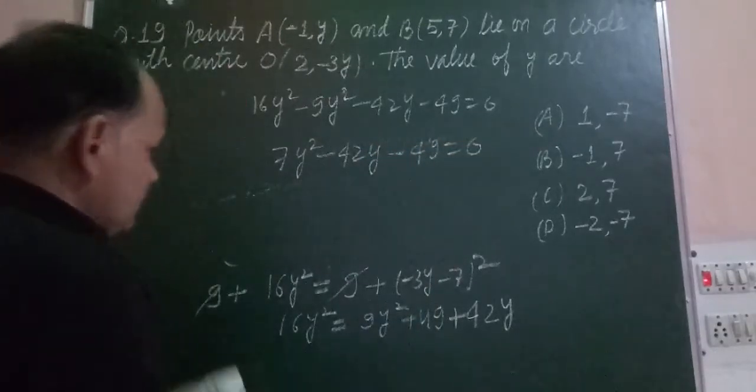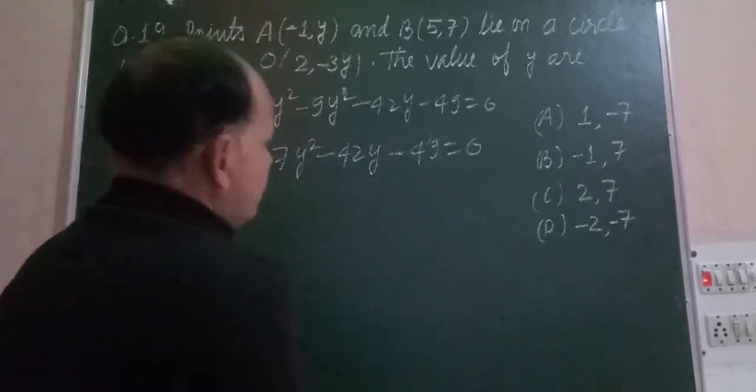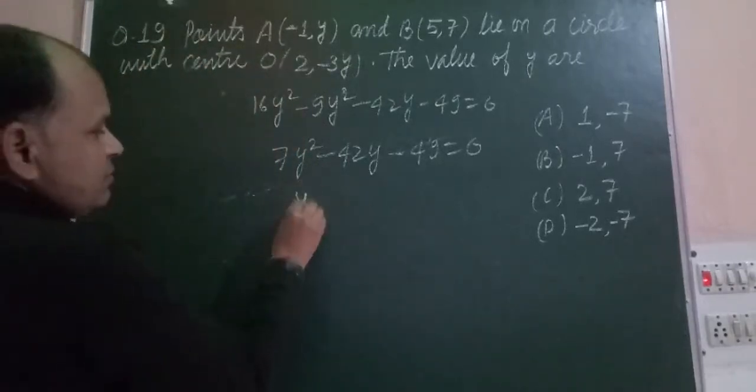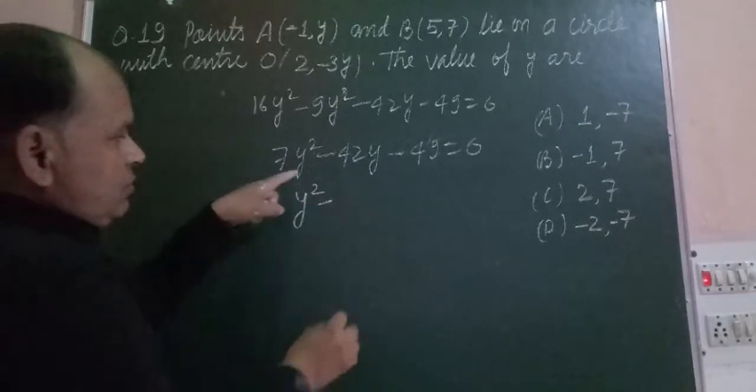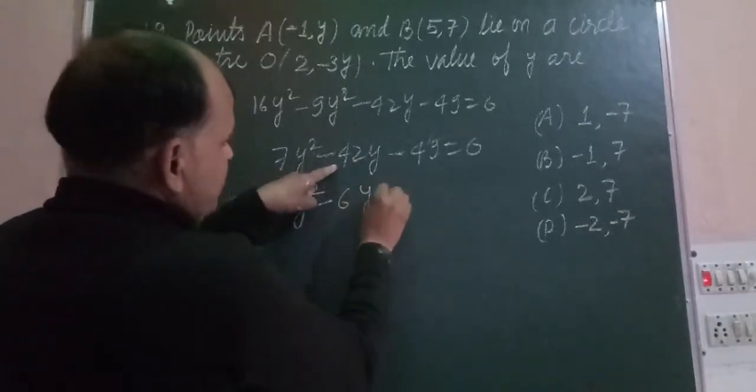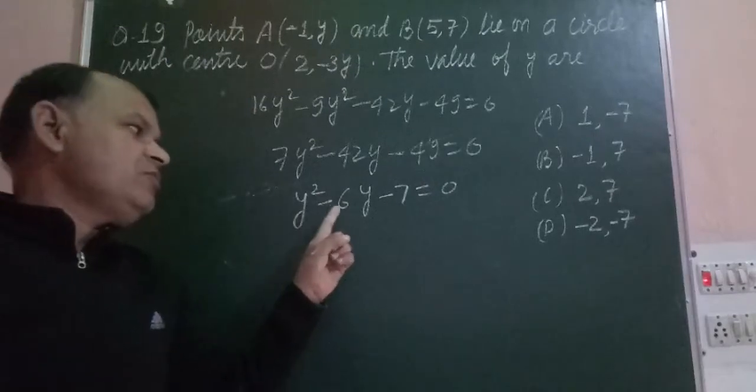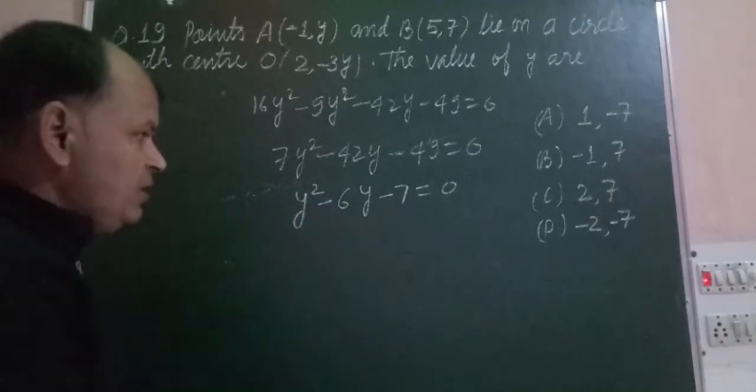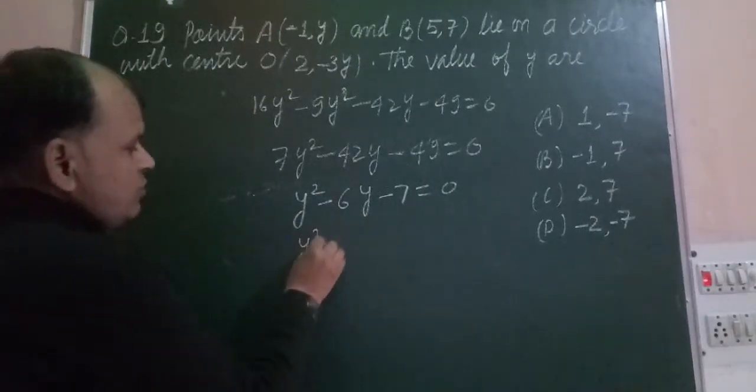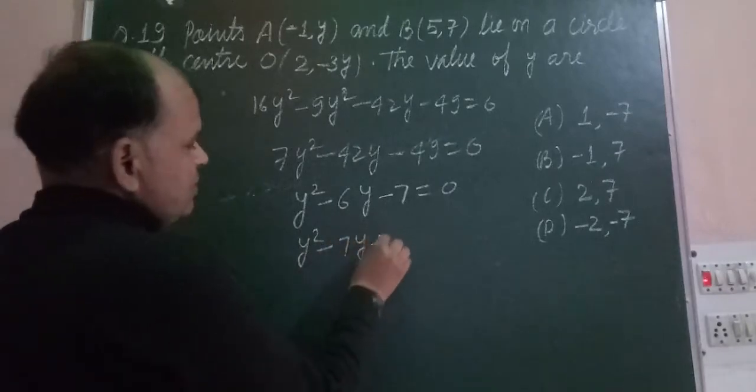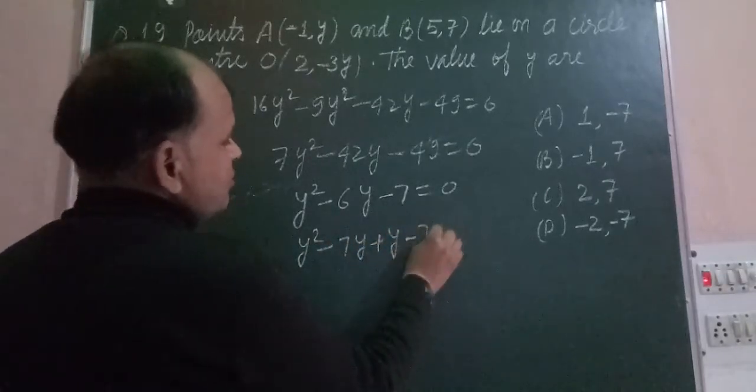Now we divide by 7, so we get Y² - 6Y - 7 = 0. Now the equation is quadratic: Y² - 6Y - 7. We make its factors: Y² - 7Y + Y - 7 = 0.